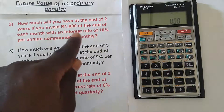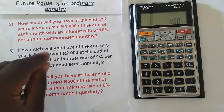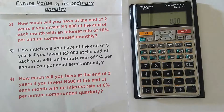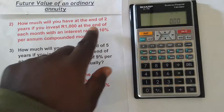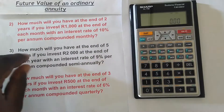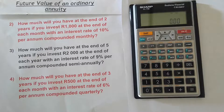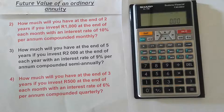Here we are told: how much will you have at the end of two years if you invest R1,000 at the end of each month with an interest rate of 10 percent per annum compounded monthly? The first thing you always check is the interest rate compounding as well as the payment period. The payment occurs at the end of each month — monthly — and the interest rate is also compounded monthly, so they coincide. If they are not the same, you need to change the interest rate to match the payment compounding.